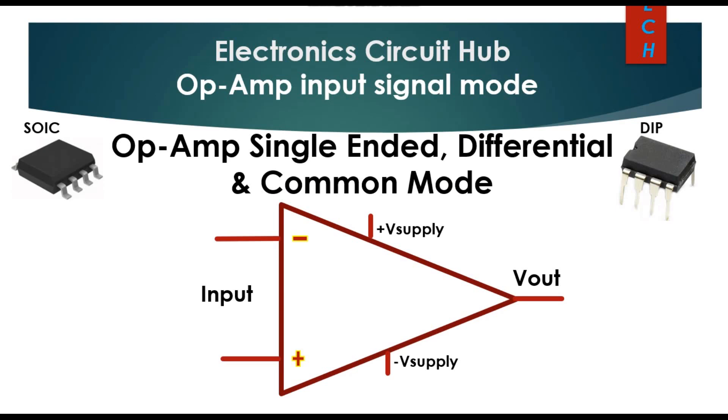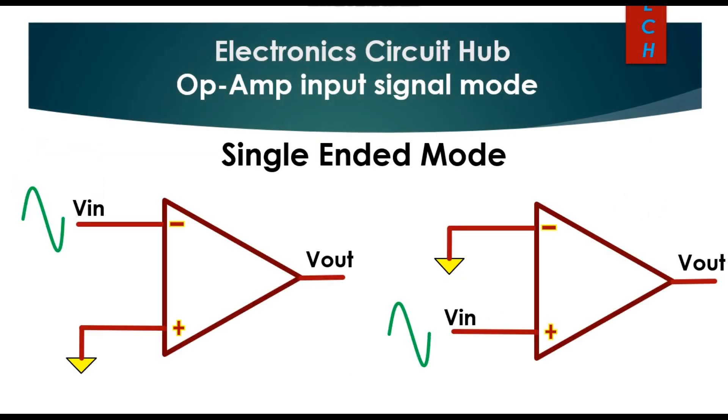In the single ended mode, the input signal is applied to only one input terminal of an op amp. Here the input signal VIN is applied at the inverting terminal and the non-inverting terminal is grounded. In case 2, the input signal is applied at the non-inverting terminal and the inverting terminal is grounded.